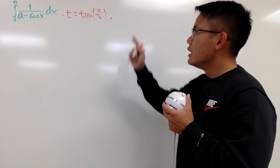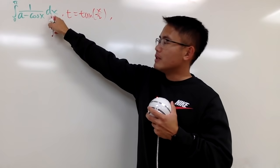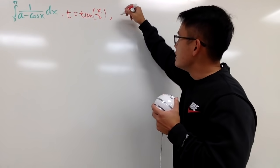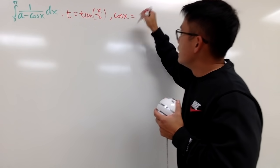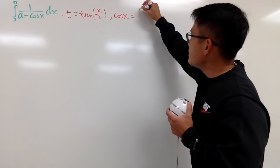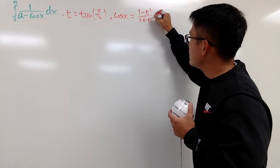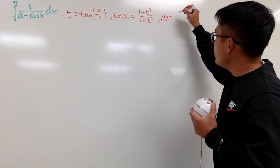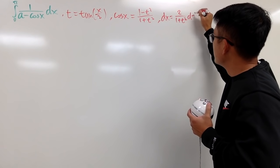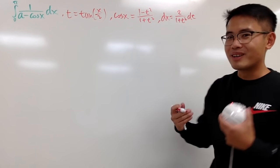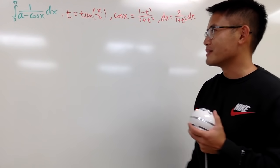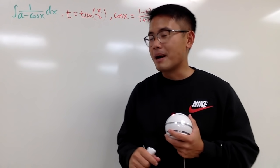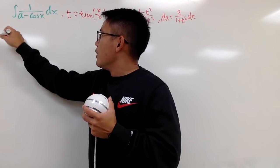Right now we are in the x world, but since we picked t as our new variable, we need to bring the integral into the t world. Based on the substitution, we can derive that cosine x equals (1 - t²) / (1 + t²), and dx equals 2 / (1 + t²) dt. I'm taking these formulas from the previous video, so go check that out. Let me focus on the integral and then plug in the limits 0 and π at the end.